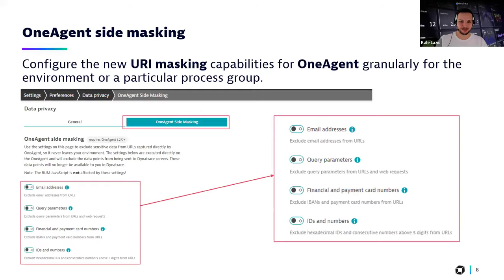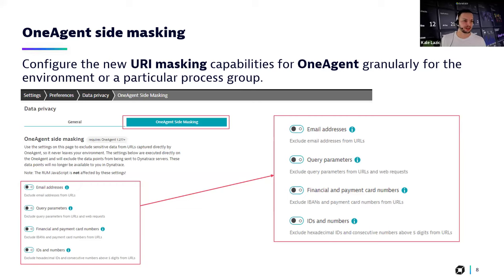Let us go to the platform context. On the platform we have the OneAgent side masking enhancement. At Dynatrace, we take the responsibility to safeguard data seriously, and we give you all the different means to configure this on different levels: on capture, on storage, on display. With this OneAgent side masking, you have one more layer where you can configure data capturing — you can directly configure that specific data points such as email addresses, query parameters, financial or payment card numbers, or IDs are not sent to the Dynatrace servers at all.